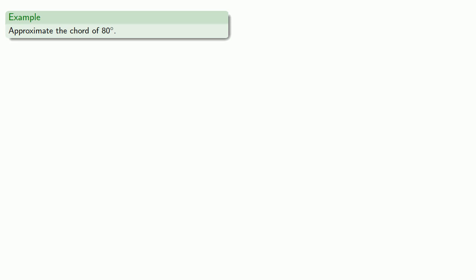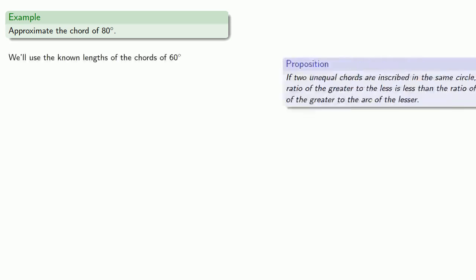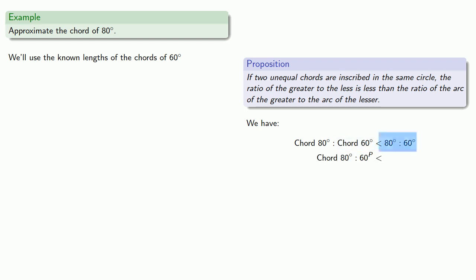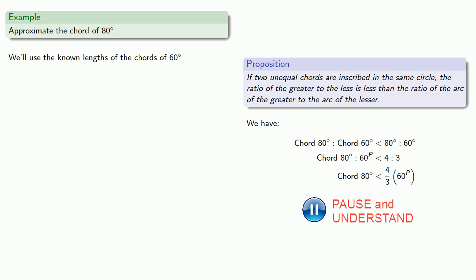For example, let's approximate the chord of 80 degrees. We'll want to find two angles — one less than 80 degrees and one greater than 80 degrees — where we know the length of the chord. Starting with the chord of 60 degrees: the chord of the greater angle is to the chord of the lesser angle — that's the chord of 80 to the chord of 60 — in a ratio less than the ratio of the angular measurements, 80 to 60. We know the chord of 60 degrees is 60 parts, and this ratio of 80 to 60 is 4 to 3. That tells us the chord of 80 degrees is less than 4 thirds of 60, meaning the chord of 80 degrees is less than 80 parts.